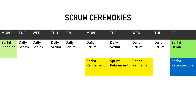This slide should give you a visual representation of when each of these events will happen during the Sprint. As we discussed earlier, a Sprint is a 2-week time box excluding the weekends. A regular Sprint typically consists of 10 working days, as you see in the slide.